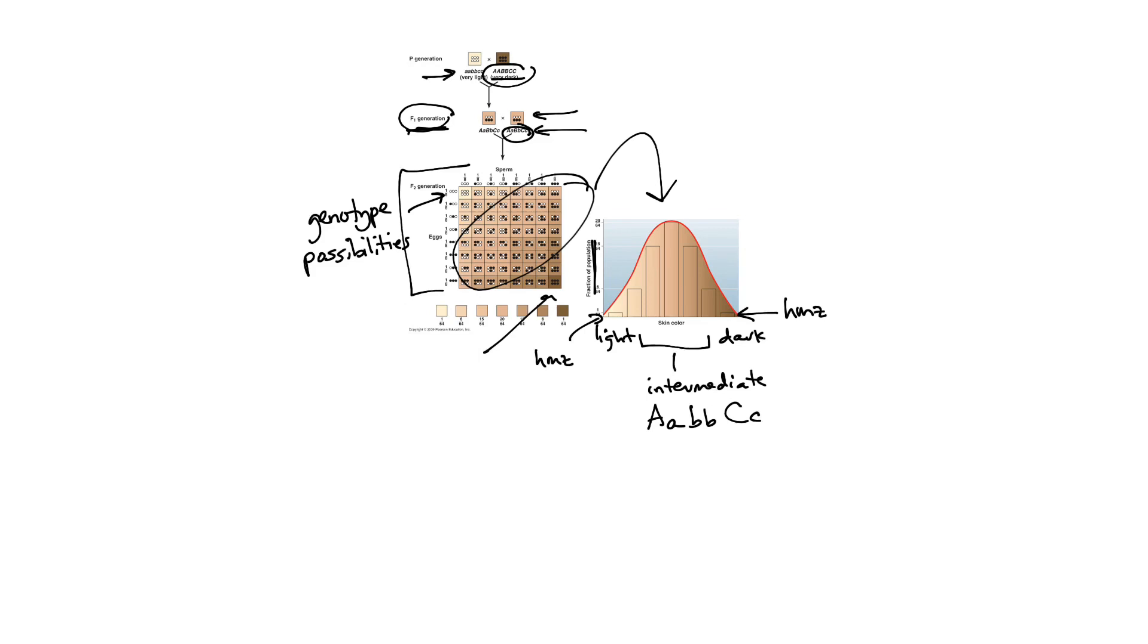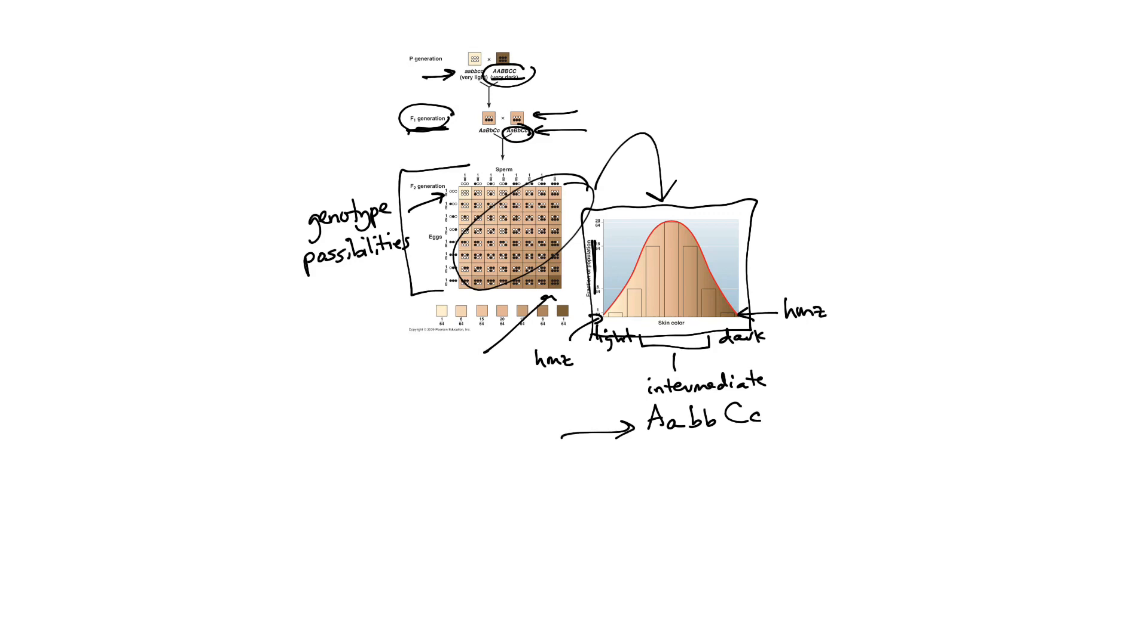All right. So this example is pretty straightforward because I'm telling you there are three genes involved in it. But if we saw a phenotype like this, a phenotype with a range of possible outcomes, how could we determine how many genes are involved in that phenotype? So let's do a practice problem.